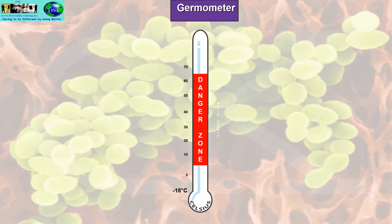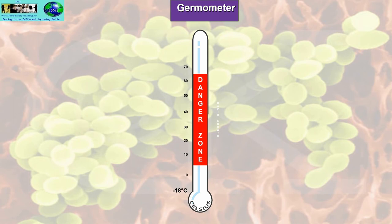Let's look at temperatures. This thermometer goes from minus 18°C up to and above 70°C — everything is in Celsius. If you need to work this out in Fahrenheit, use the formula: multiply by 9 over 5 and add 32, and the reverse to go from Fahrenheit to Celsius.